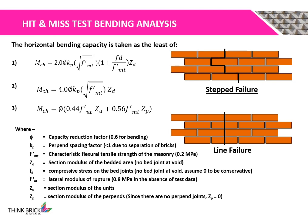The factors affecting horizontal bending capacity include: Phi, the capacity reduction factor, taken as 0.6 for bending; Kp, the perpen spacing factor, taken as less than 1 for Hidden Mist Walls; Fmt, the characteristic flexural tensile strength of the masonry, taken as 0.2 MPa; Zd, the section modulus of the bedded area, which is calculated; and Zp, the section modulus of the perpens. Since there are no perpen joints in Hidden Mist Walls, Zp is taken as 0.